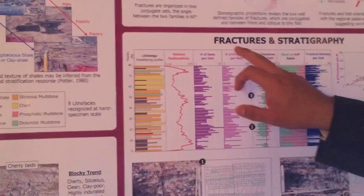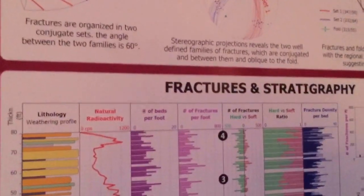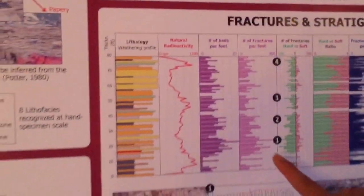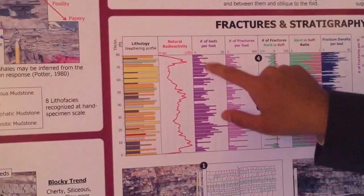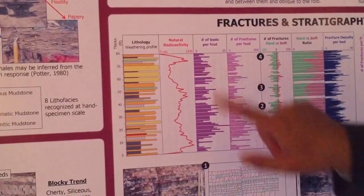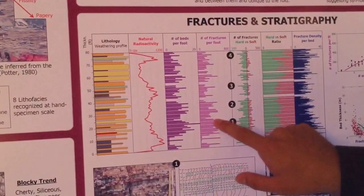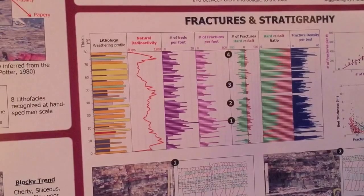Finally, we correlate the fracture analysis and stratigraphy. As you can see here, at the bottom of the outcrop we have more beds per foot than the top. And we have more fractures per foot at the bottom than the top.